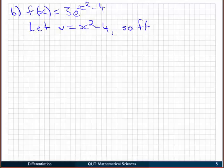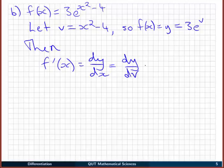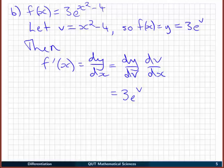So f of x, or y, is equal to 3e to the v. And then my chain rule says that f' of x, or dy/dx, is dy/dv multiplied by dv/dx. If y is 3e to the v, my rules for the exponential function tell me that dy/dv is 3e to the v again. dv/dx then is just differentiating x squared minus 4, which is just 2x.